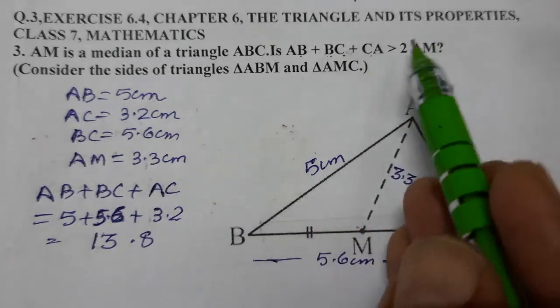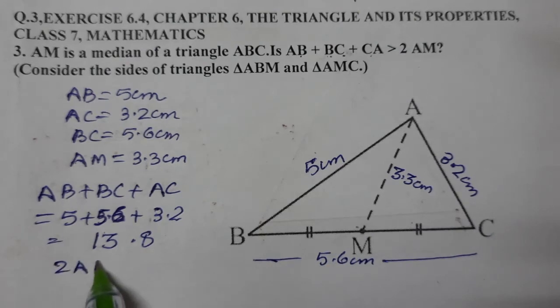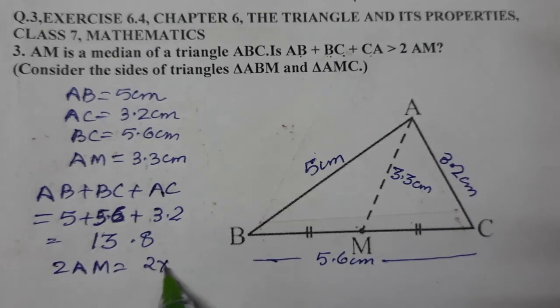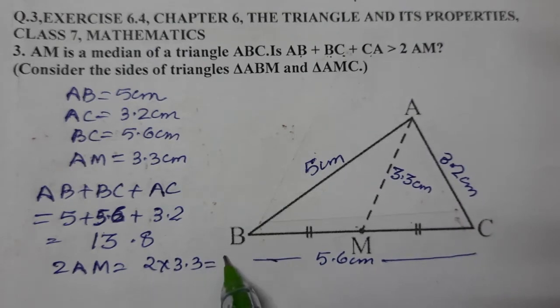Now 2 AM. 2 AM means we have to multiply 2 with AM. So 2 into 3.3 equals 6.6. We are getting 6.6.